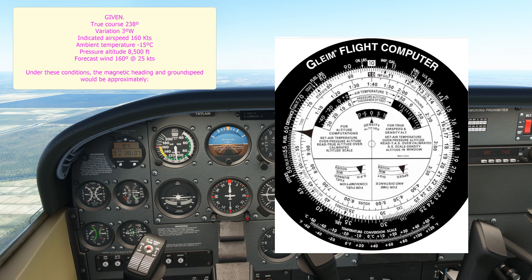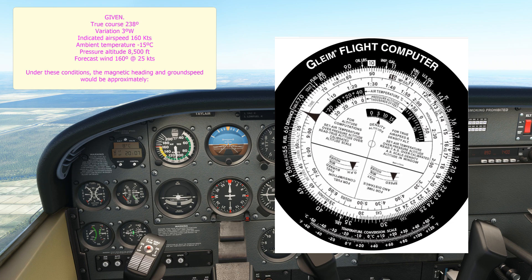We're given an ambient temperature of minus 15 degrees Celsius, which is located approximately here on the scale. The pressure altitude is 8500 feet — that's on the white-on-black scale. This is 5000 feet, and we go up 1000 feet at a time, so 8500 feet is approximately here. We rotate the wheel to line this up. Now we read the indicated airspeed of 160 on the inside scale, which matches up with just under 178 on the outside scale — we'll call that 177 knots true airspeed.